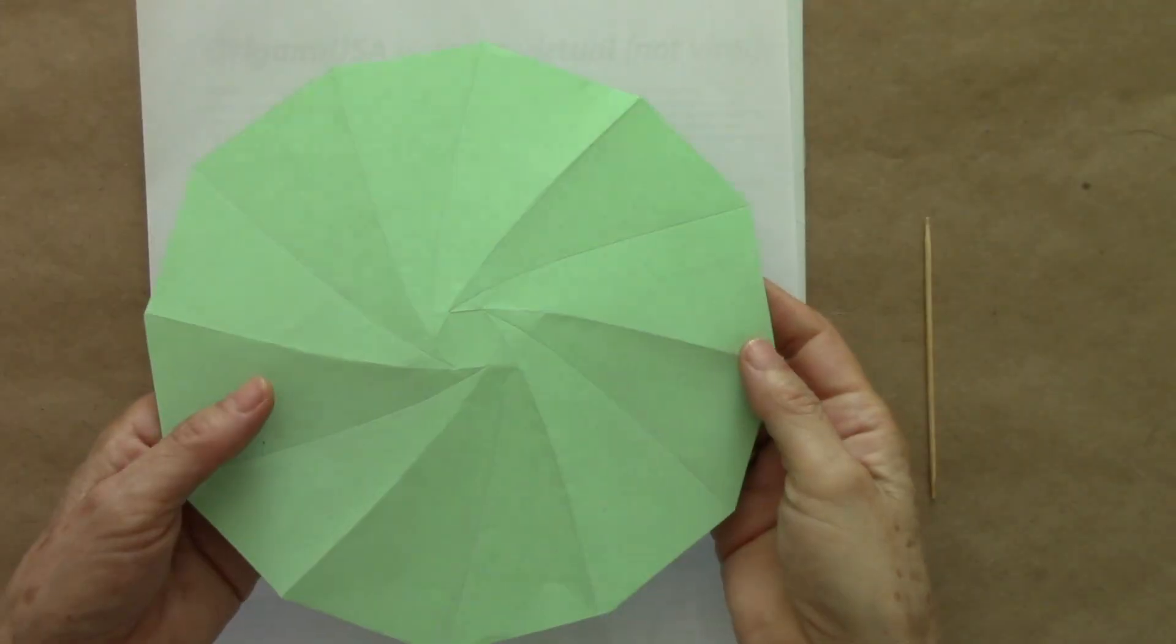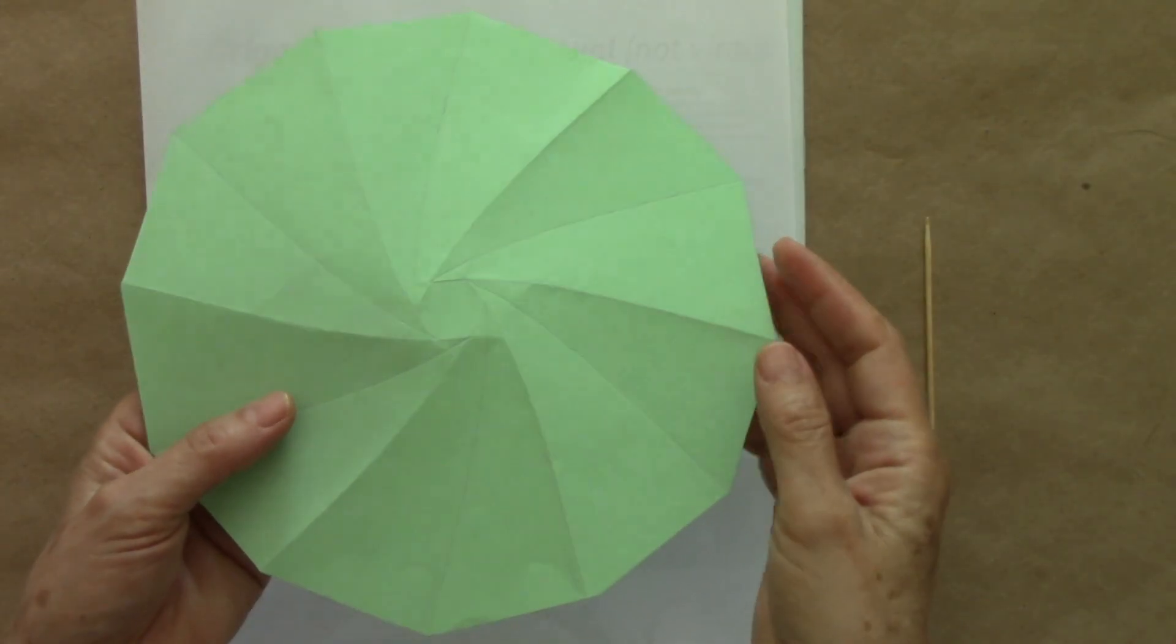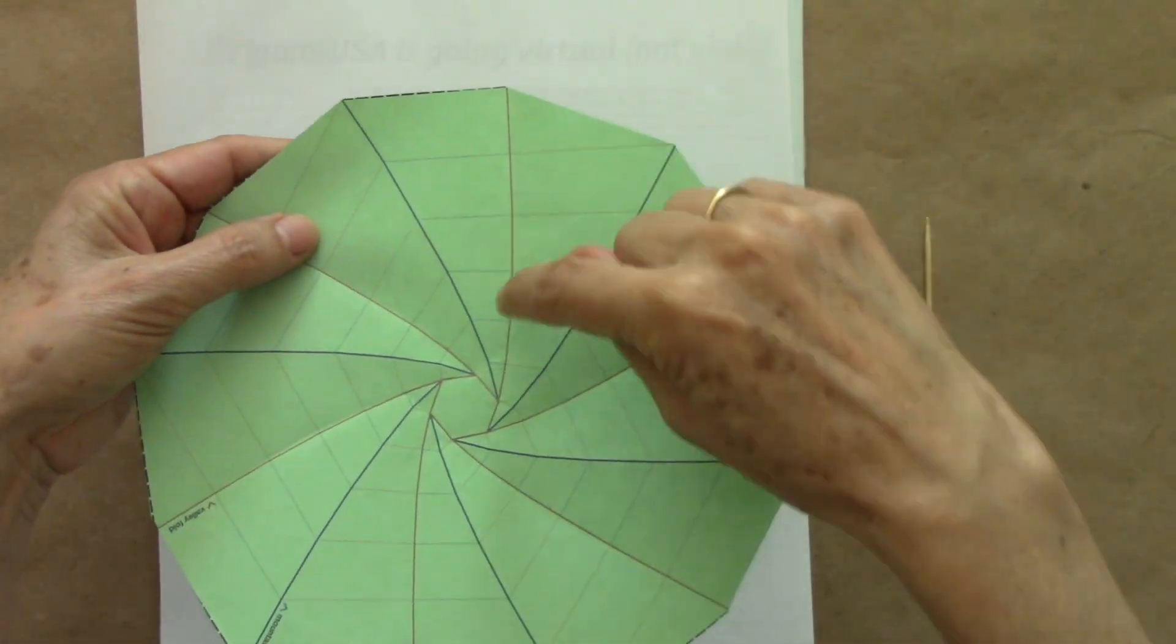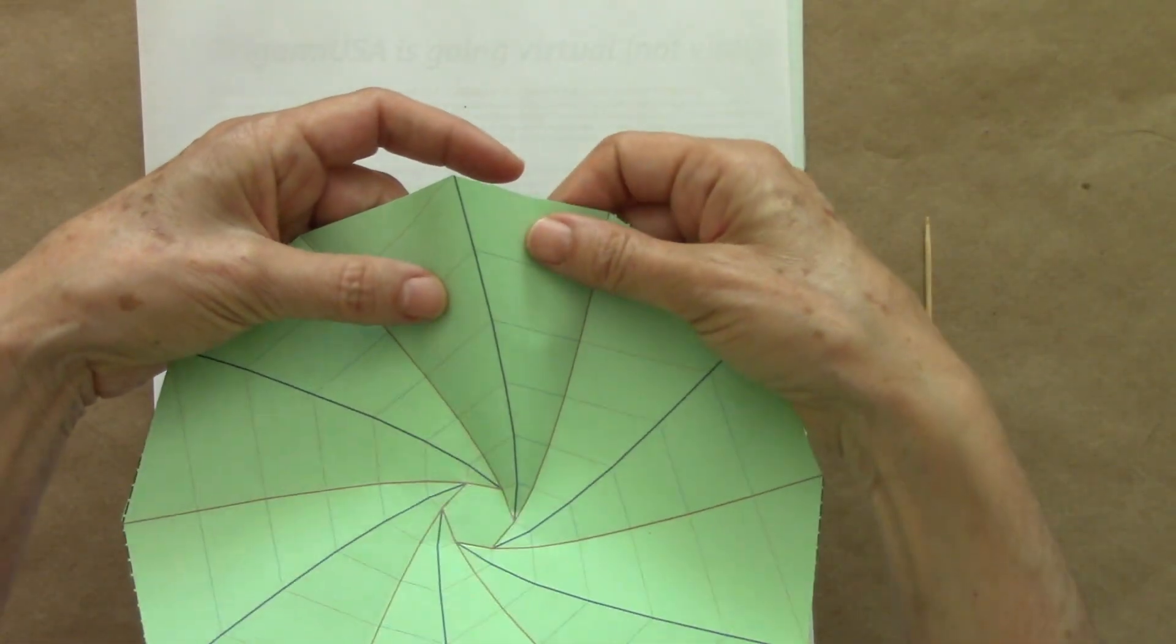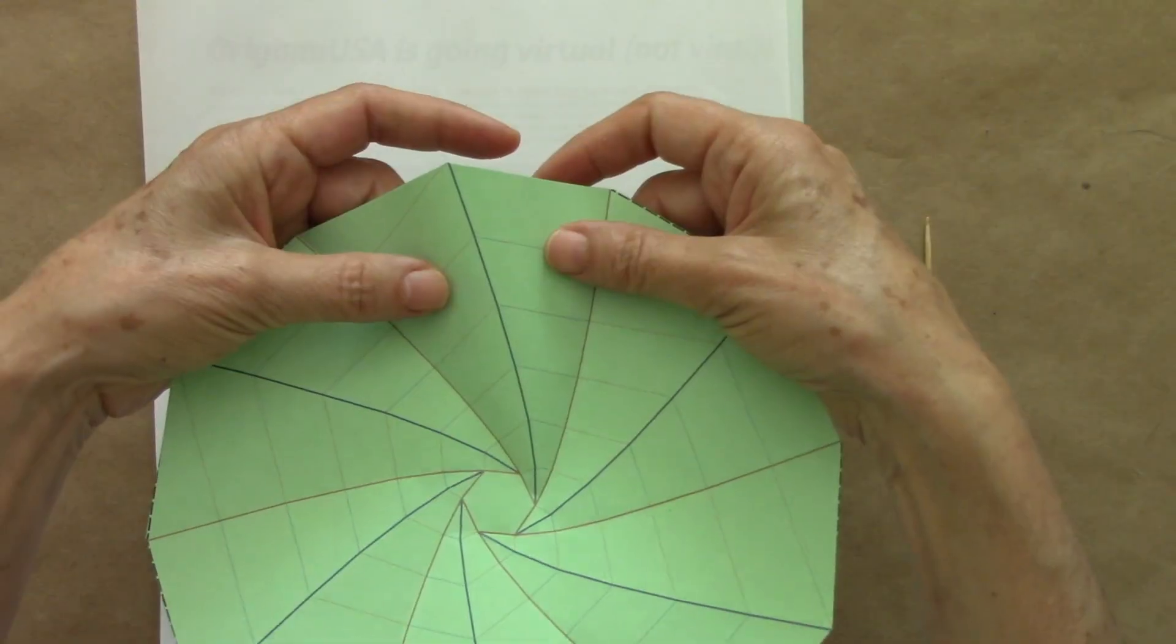We have scored all the creases that we need. We are going to turn it over. We've made our valley folds before, and now the blue ones are scored as mountain folds.